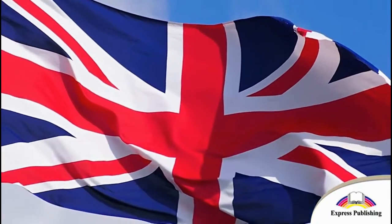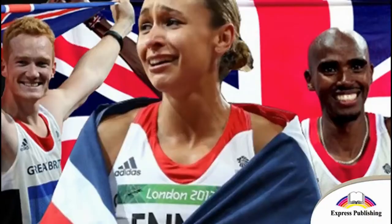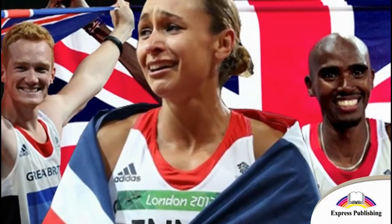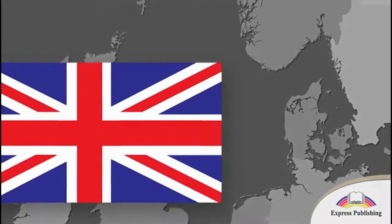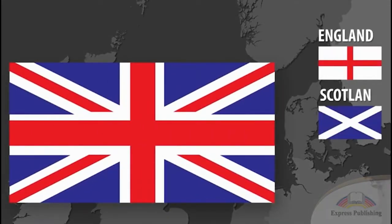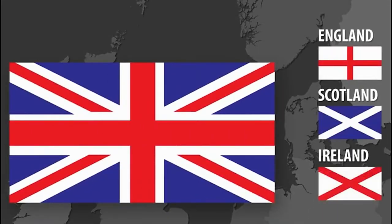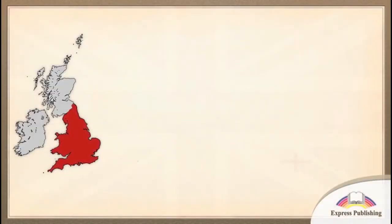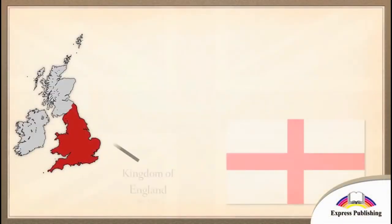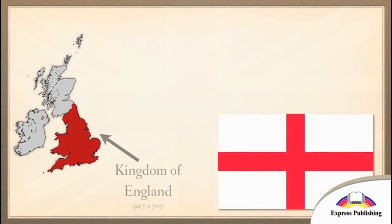The Union Jack, or Union flag, is the national flag of the United Kingdom. The flag is the English, Scottish and Irish flags together. The flag of England, or the St George's Cross, is a red cross on a white background.